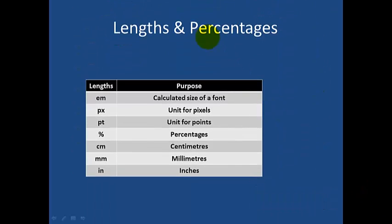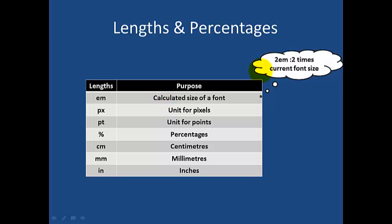Next, Length and Percentages. If you have a web page, the font weight, the margin width, the margin border — you can use a measurement. The EM has a length — it's a calculated size of a font. For example, 2 EM means 2 times the current font size. If the current font size is 12, then 2 EM calculates to 24.